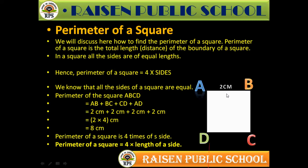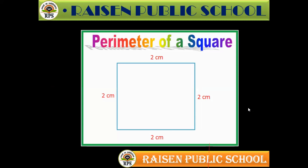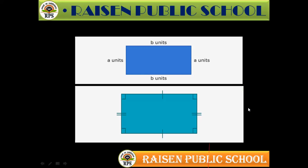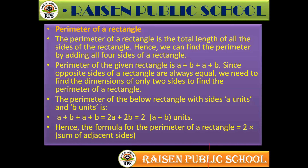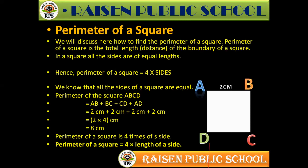An example is given: which side has a length of 2 cm? The square has a side of 2 cm. The sides of a square are equal. If one side is 2 cm, the other side will also be 2 cm. We know that all sides of a square are equal.